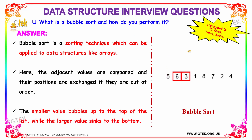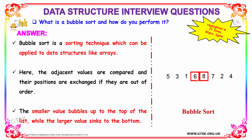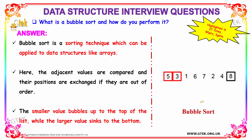Our next question is: what is bubble sort and how do you perform it? Bubble sort is a sorting technique which can be applied to data structures like arrays. Adjacent values are compared and their positions are exchanged if they are out of order. The smaller value bubbles up to the top of the list while the larger value sinks to the bottom. Here, the largest value is 8 and it sinks to the bottom on gradual evaluation. You perform bubble sort by exchanging numbers, popping them up and pushing them down.